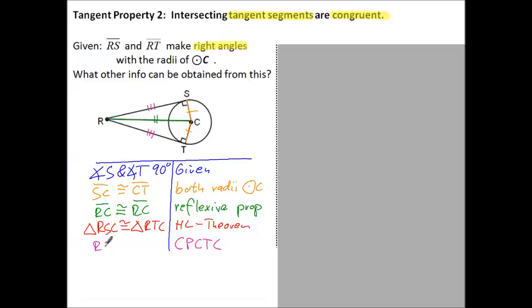That means that segment RS is congruent to segment RT, and those are two tangents. So there you have it. The tangent segments are congruent. Just by way of proof for tangent property 2.